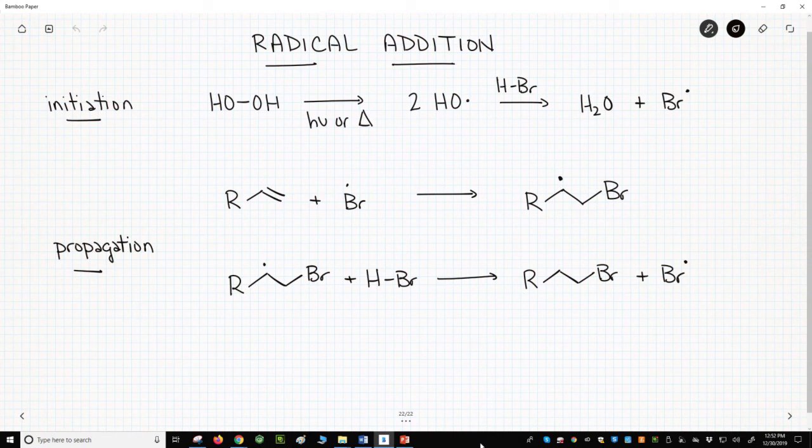For initiation with heat or light, H2O2 undergoes hemolysis to form two OH radicals. An OH radical reacts with HBr to form water and Br dot. Br dot is the propagating radical for the reaction.